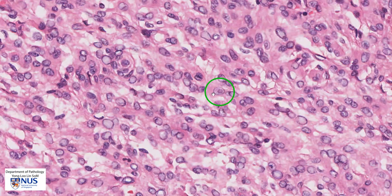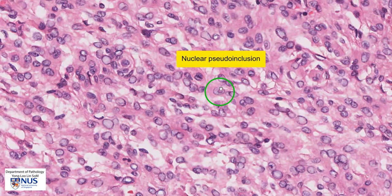Here is another feature to highlight in a meningioma. This is a nucleus, but within the nucleus there is a little island of cytoplasm, which is pink and appears the same as the cytoplasm of the cell. This is a nuclear pseudo-inclusion, which is an infolding of the nuclear membrane, and this is also a feature that is quite frequently seen in meningioma.